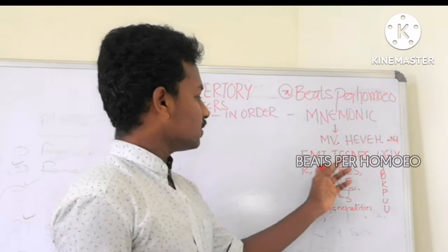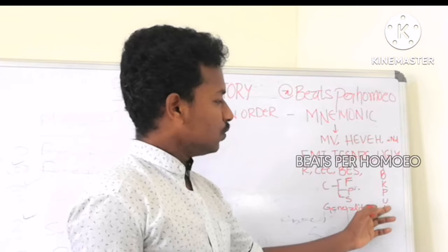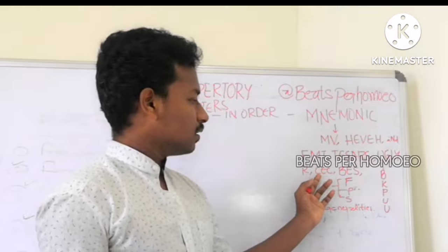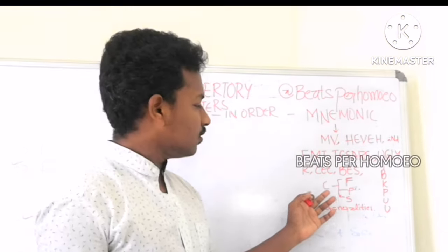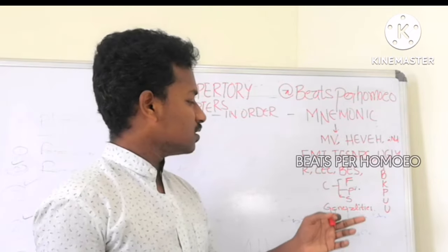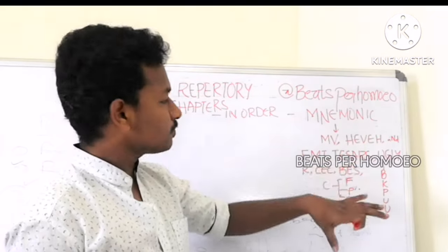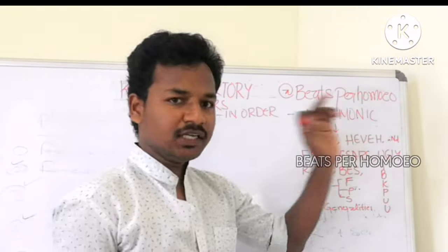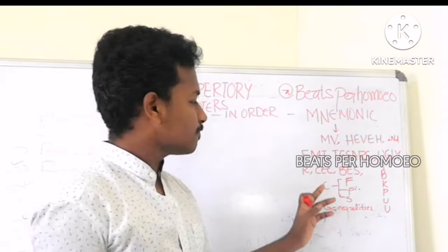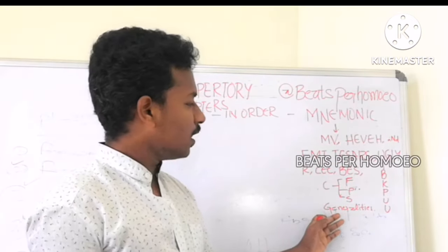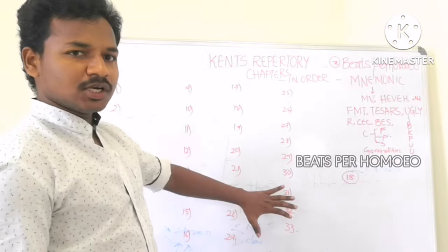Teaser means movie teasers. Teaser and UGLY. In UGLY there are five chapters: U, B, K, P, U, and R. Then groups like CEC, BES, and E, and another group we can remember as C, F, P, S — as in Calcarea — and then Generalities. With these simple words we can remember the total 37 chapters in the repertory. Kent's Repertory: M, V, H, E, V, E, H, then F, M, T, Teasers, UGLY, R, CEC, BES, and next C, C, F, P, S, S, and Generalities. Now I have written 37 chapters. This is a simple mnemonic. We can remember all Kent's chapters in sequence order.